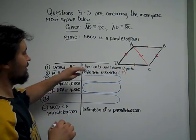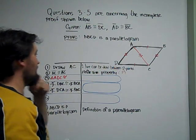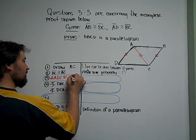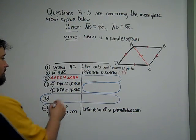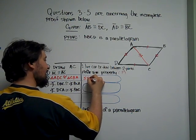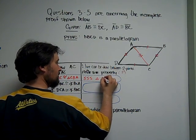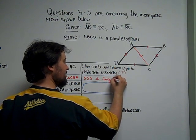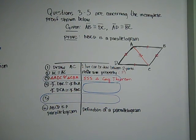Excuse me. If I want ADC, then I'm going to go CBA. And the reason for this is side, side, side triangle congruence theorem, we'll say. You can also just say SSS theorem.